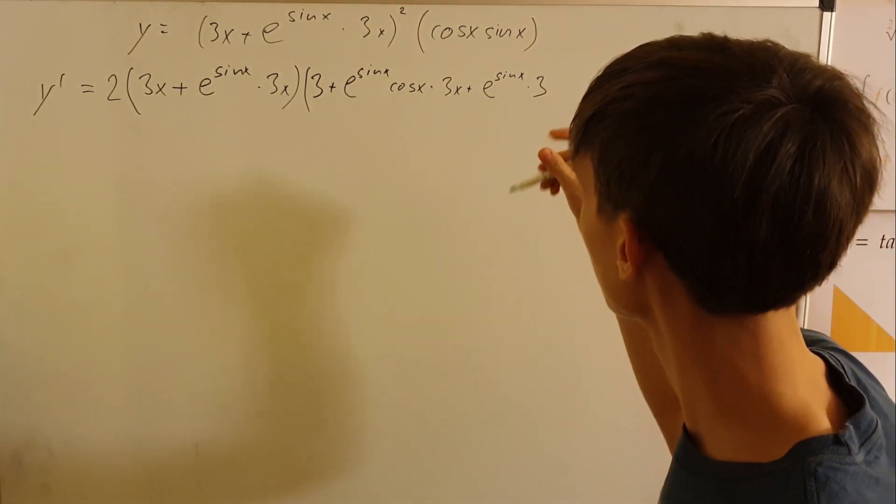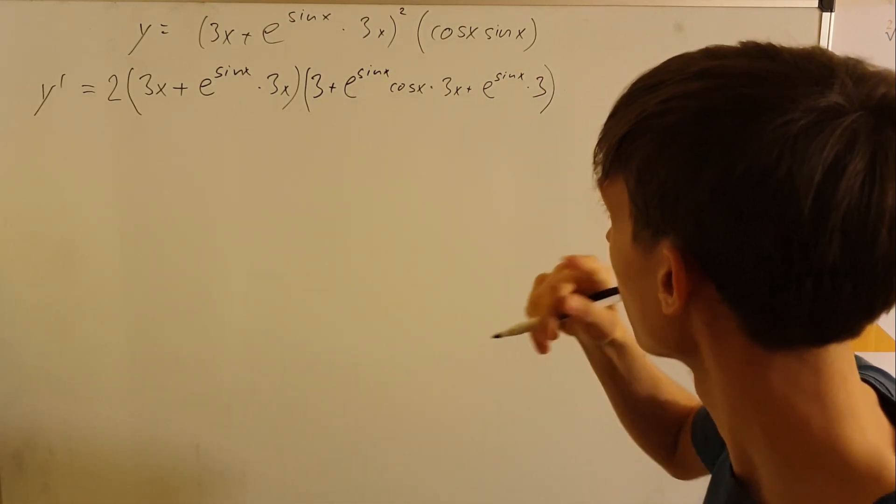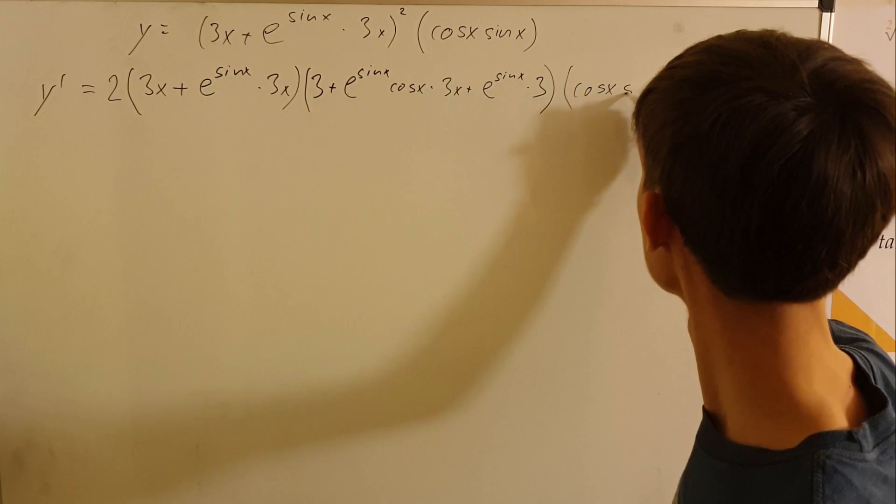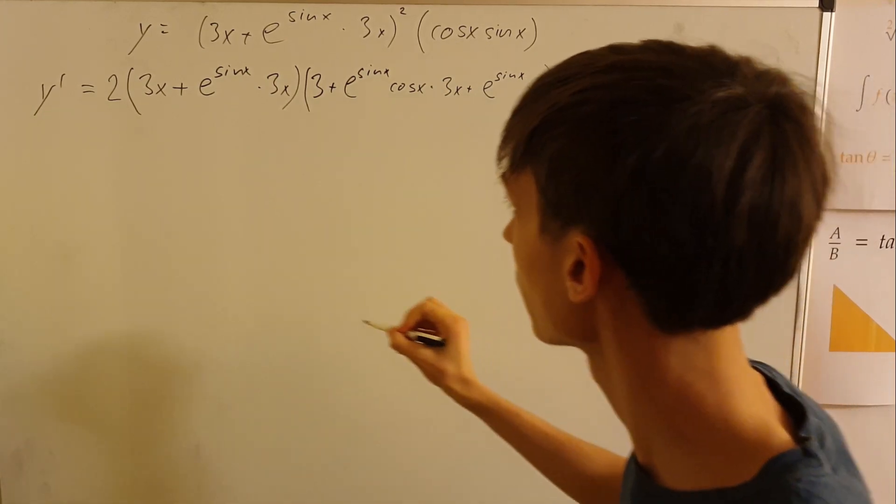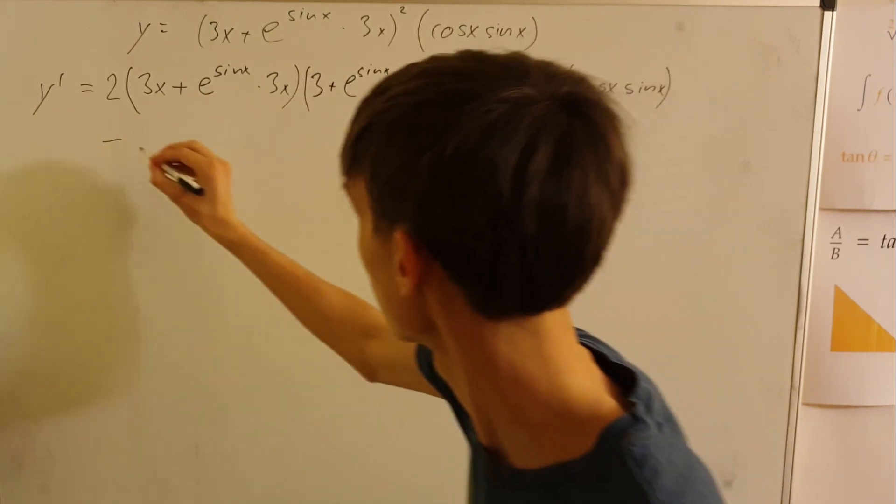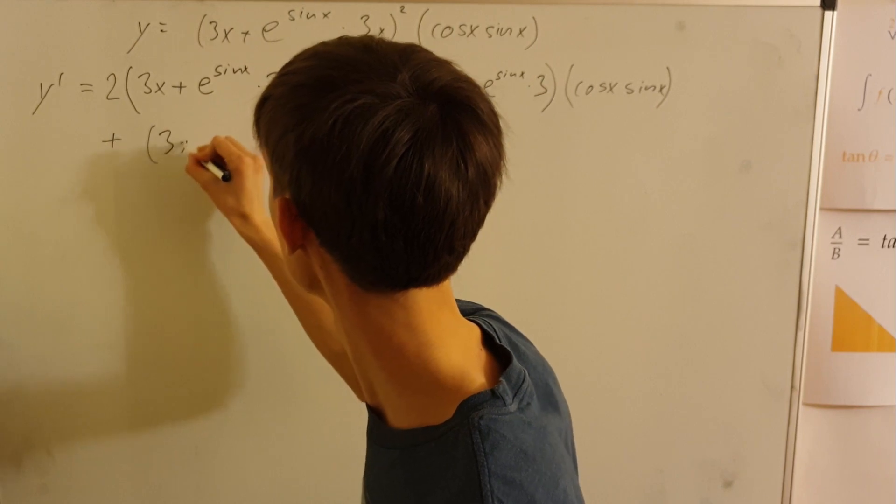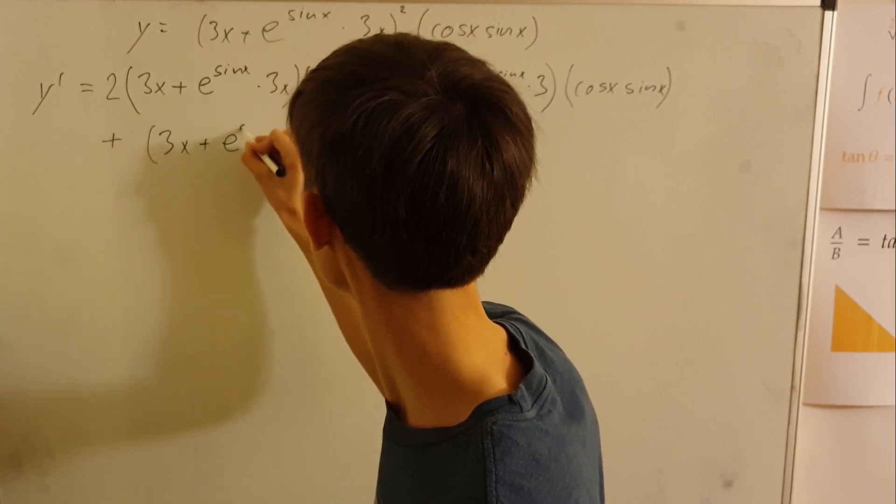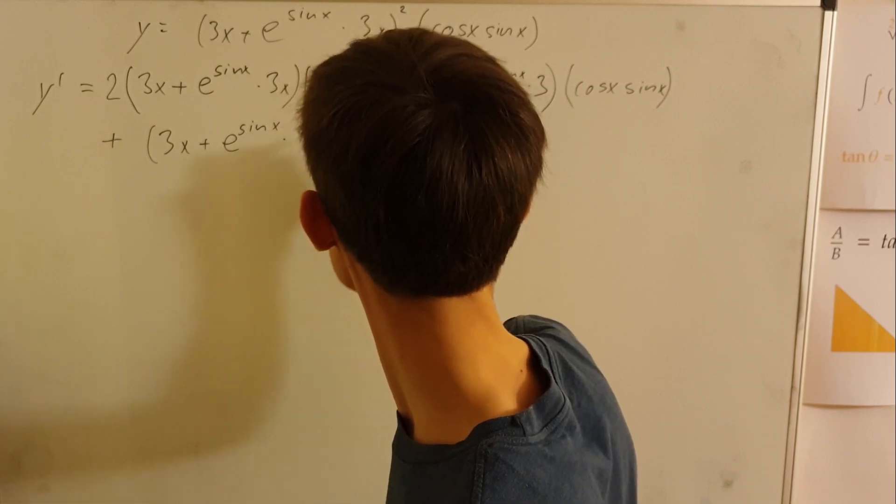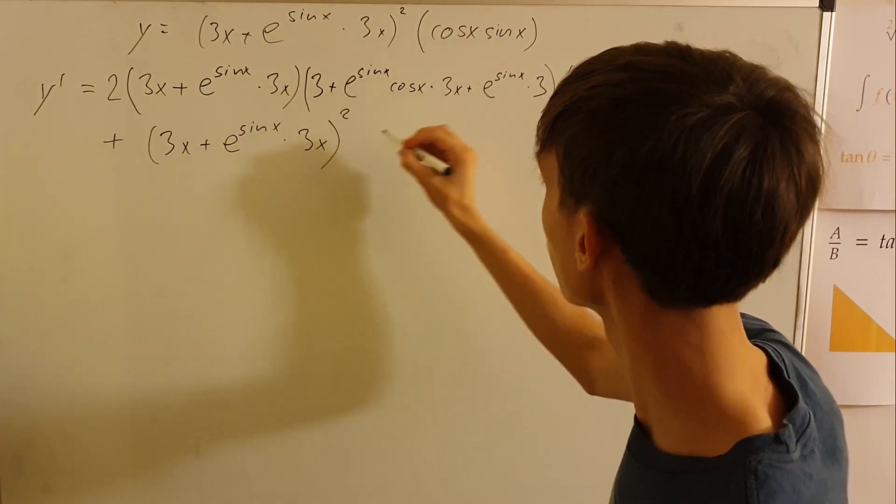And then we are of course multiplying all of this by unchanged second function. And now we finally get to the second part which will be adding the first one unchanged and multiplying it by the derivative of the second